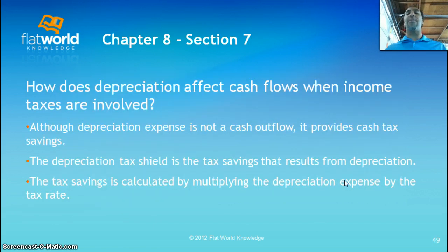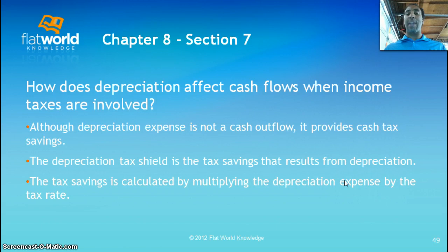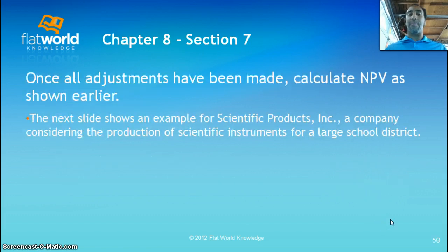How does depreciation affect cash flows when income taxes are involved? Although depreciation expense is not a cash outflow, it provides cash tax savings and acts as a tax shield. The depreciation tax shield is the tax savings that result from depreciation, and it is calculated by multiplying the depreciation expense by the tax rate. Once all adjustments have been made, calculate net present value as shown earlier.